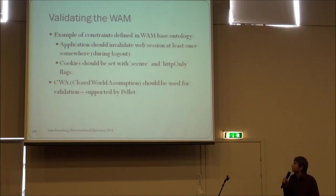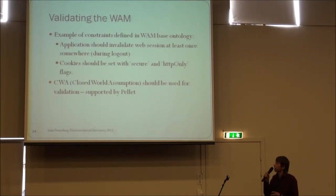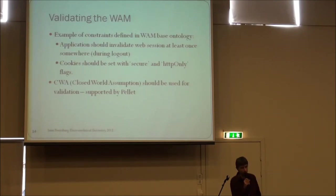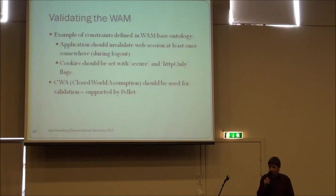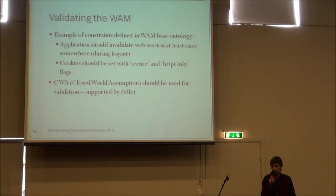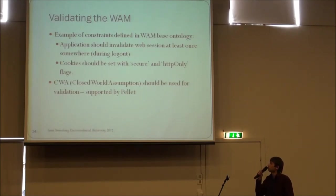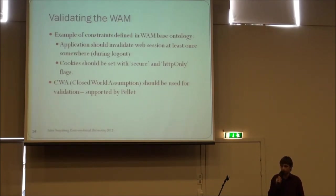You can also define constraints in the web application model ontology to do some simple validation of the populated ontology. Examples include that the application should validate the web session somewhere — so somewhere in the graph there should exist one individual of a session validation operation — and that cookies should be set with secure flag. However, the first constraint won't work directly because OWL uses the open-world assumption, so we cannot truly prove there are no session validation operations. It likely makes sense to use the closed-world assumption, which is supported by some reasoners such as Pellet.